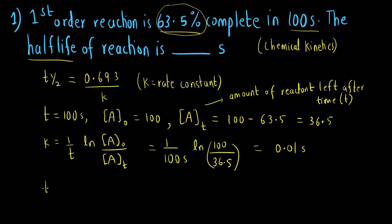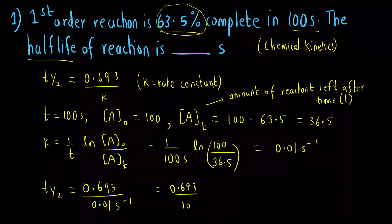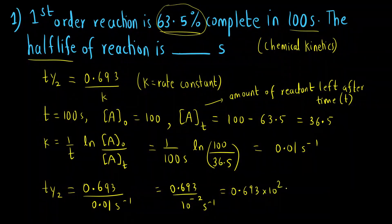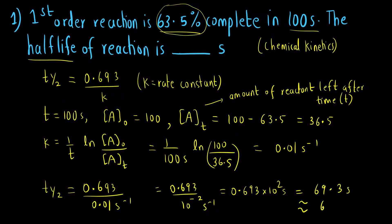Now we have the rate constant, so we can find the half-life. Half-life = 0.693 / 0.01 s⁻¹. Since 0.01 = 10⁻², this becomes 0.693 × 10² seconds, which equals 69.3 seconds. The answer given was 69 seconds, which is the final answer for this question.